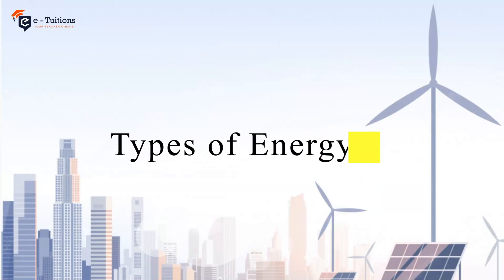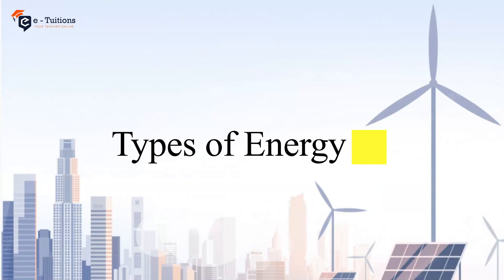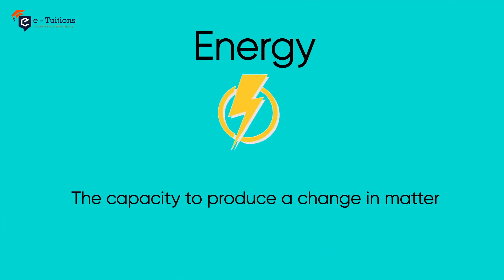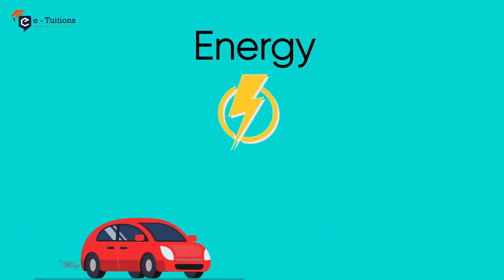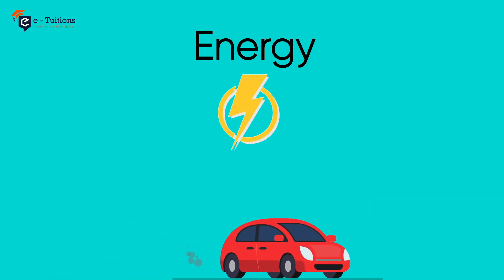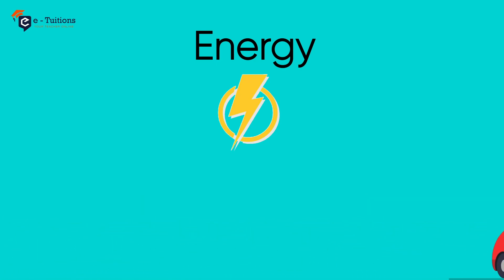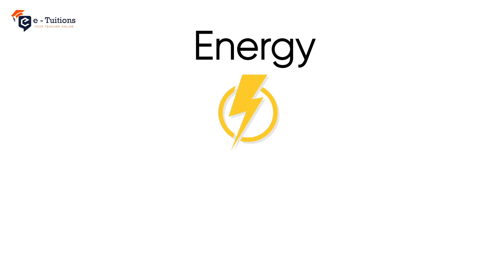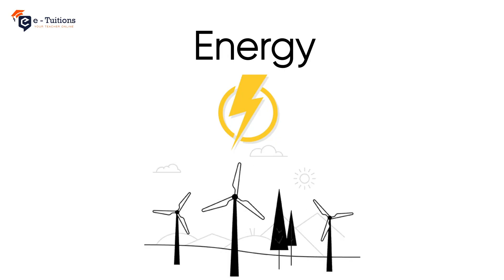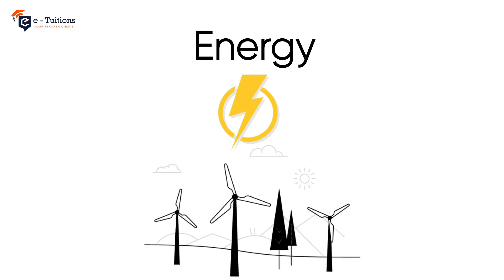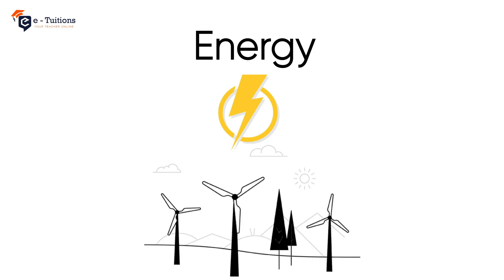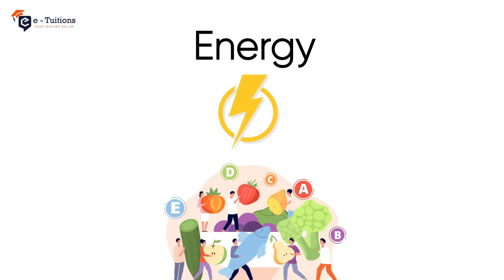Hello kids, let's learn about types of energy. Energy is anything that has the capacity to produce a change in matter. A car moves by the energy produced by motor combustion. The energy produced by wind moves the blades of a mill. We get energy from food.